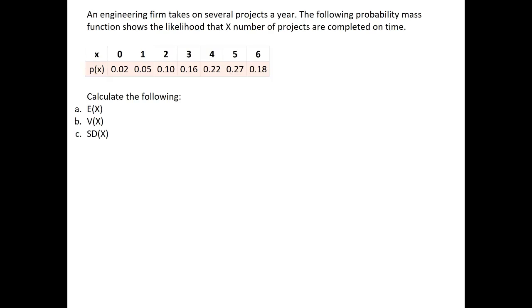In this example, we will go through how to calculate the expectation, variance, and standard deviation of a discrete random variable. An engineering firm takes on several projects a year. The following probability mass function shows the likelihood that x number of projects are completed on time.